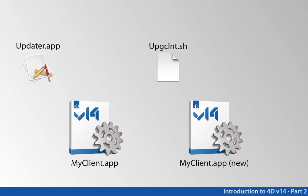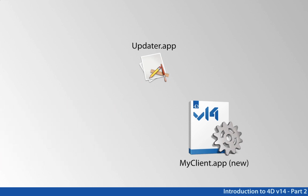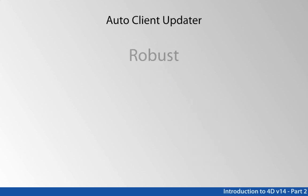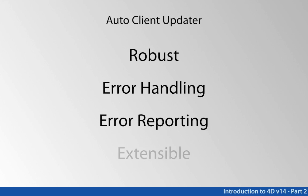In V14, we address this by replacing that script file with an application: updater.app on Mac and updater.exe on Windows. For the 4D developer, transparently it does the same thing — it renames the old client, renames the new client, deletes the old client, launches it, and connects to the server. The difference for 4D the company is that using an application gives us something much more robust, with more effective error handling and more effective error reporting. There's actually a log file for the update. And most importantly, it's something appropriate for the future — easier to extend and maintain.